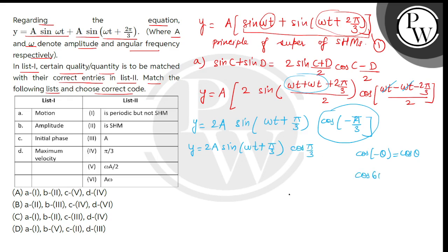So y is equal to 2a sin within bracket omega t plus pi by 3, multiplied by cos pi by 3. अब cos pi by 3 means cos 60 degree, जिसकी value होती है half। तो यह half 2 से cancel हो जाएगा। हमें मिलेगा y is equal to a sin of omega t plus pi by 3 — यह आएगा equation number 2.